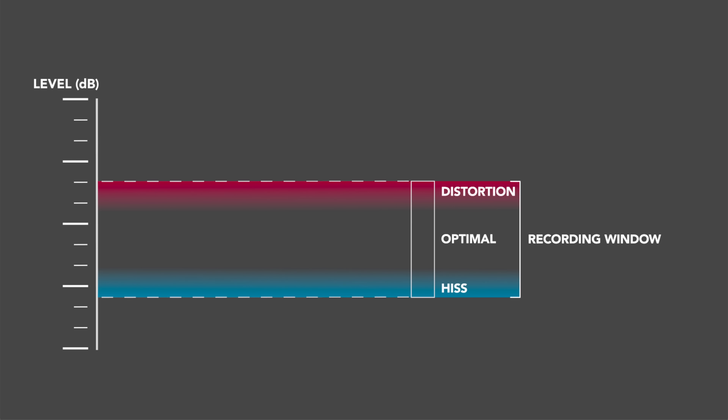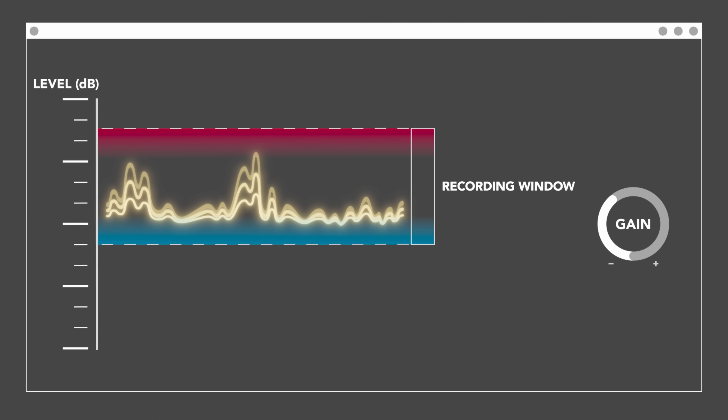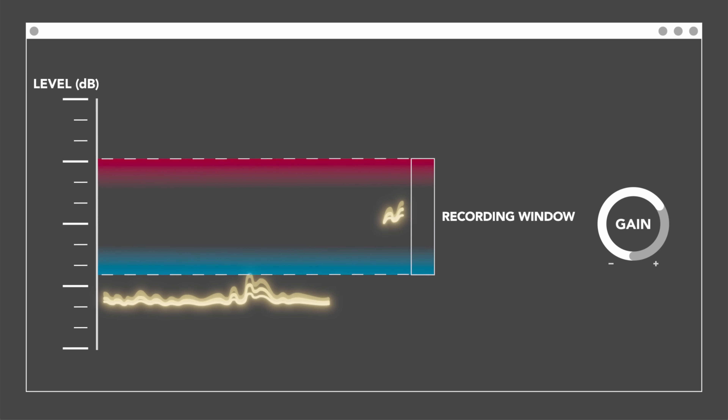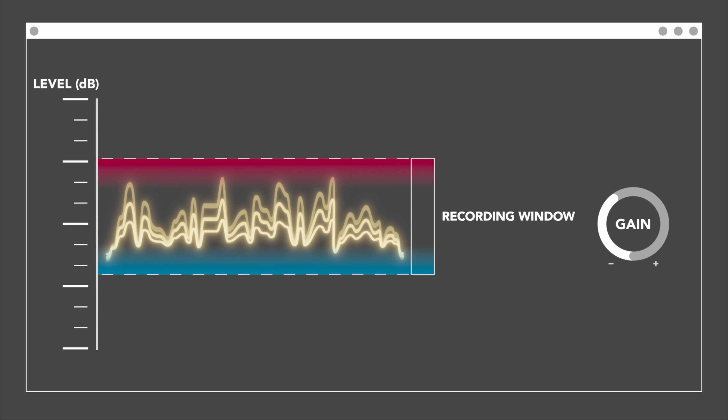Once you have made your recording in 32-bit float, because you've captured all of the information from the microphone capsule, you can then effectively alter the gain of your recording after you've made it. It's like being able to set the gain in exactly the right spot after your recording. Think of the sliding window analogy: after you've made your recording, you can open it in your DAW and slide the window to get optimal audio levels, simply by turning the gain up or down. Things sound a bit quiet — slide the window down. Things are too loud and distorted — slide the window up, and the distortion will go away. This completely takes the guesswork out of setting gain, as you can set it perfectly to match your audio source in post-production.